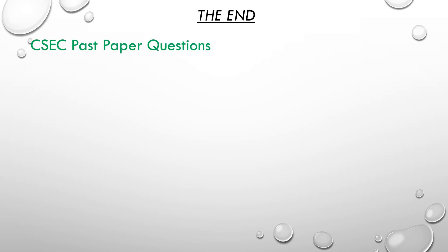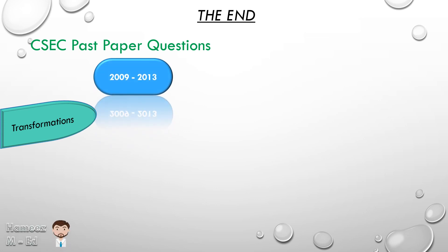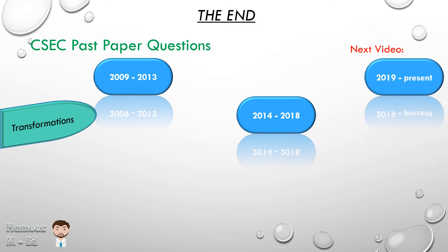This brings us to the end of CSEC past paper questions on the topic of transformation. In our first video we covered questions for five years from 2009 until 2013, and in this video we did the next five years from 2014 until 2018. In our next video we'll be doing from 2019 until the present. Don't forget to look at the description down below so you can get a better understanding of this math syllabus by following the order which we have suggested.